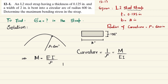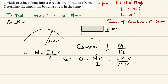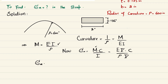The maximum bending stress formula is sigma equals M times c divided by I. Substituting M equals EI over rho into this equation gives sigma equals (EI/rho) times c divided by I. The I terms cancel, leaving maximum bending stress equals E times c divided by rho.